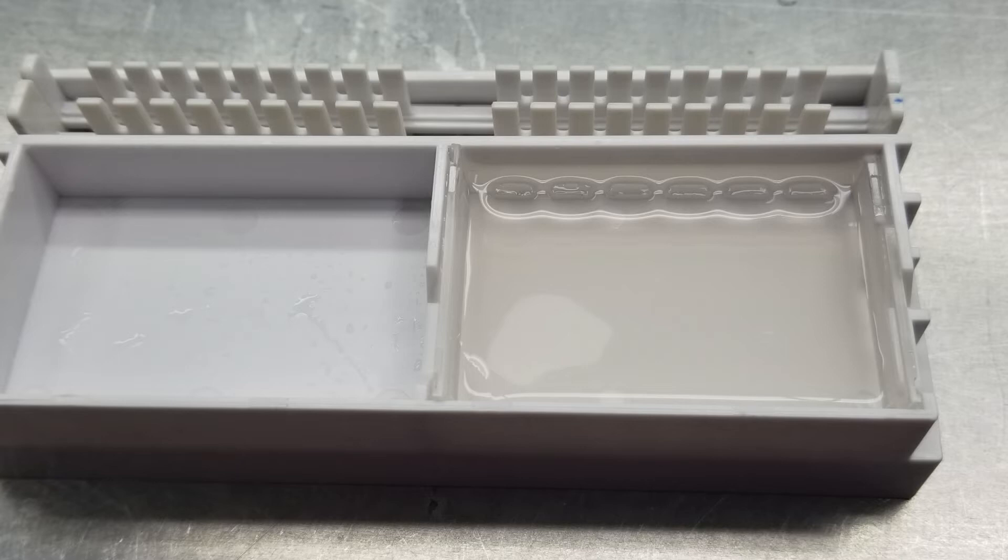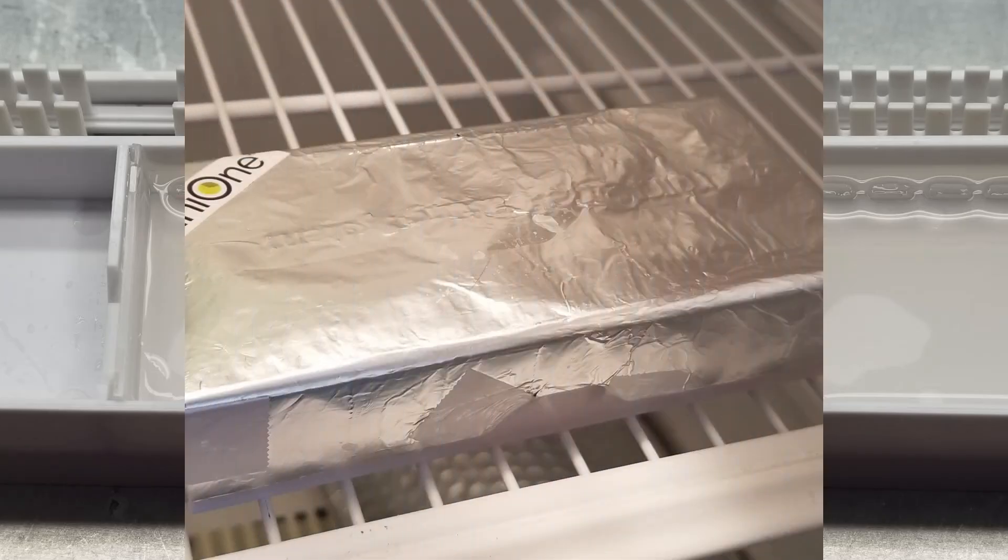If you want to store the gels overnight, leave the gels and casting trays in the casting stand. Add some buffer to them, the same type of buffer used to run the gel, and make sure the wells are filled first, then add 1 milliliter of the buffer to the surface. Rock the casting system slightly to make sure the buffer is spread across the entire surface. Place the cover over the casting stand and store at 4 degrees Celsius.